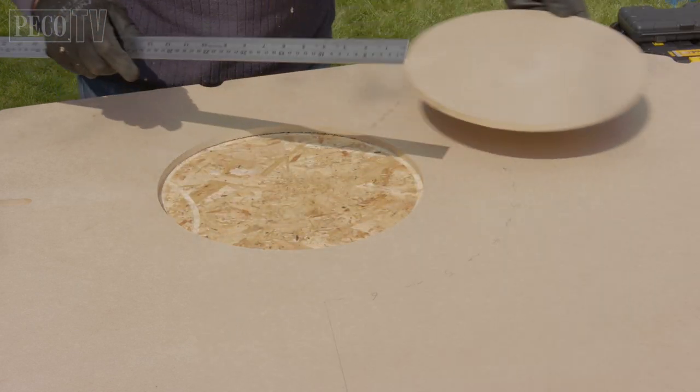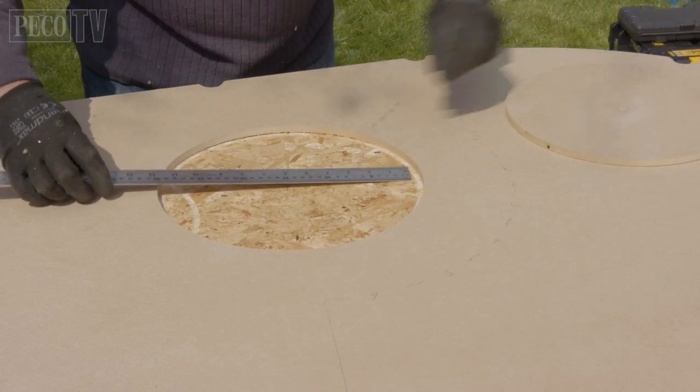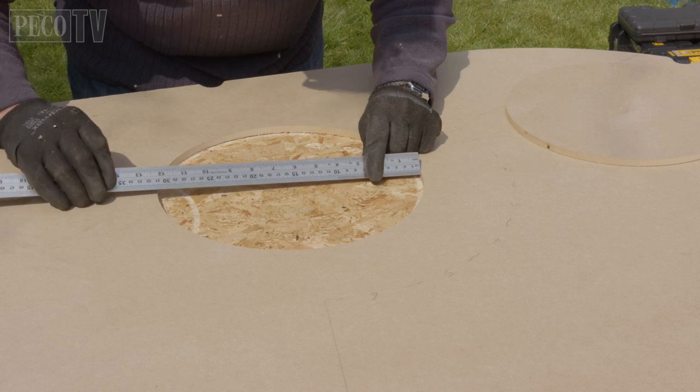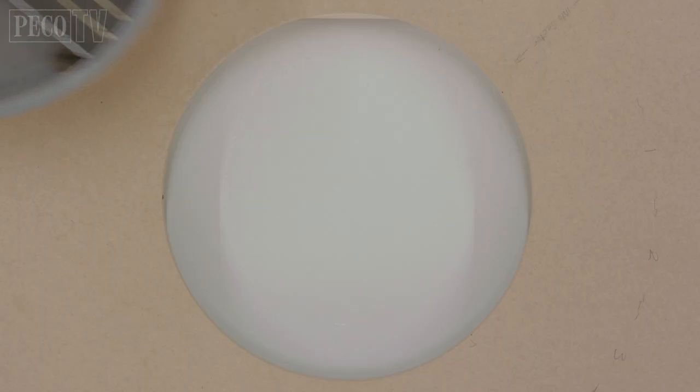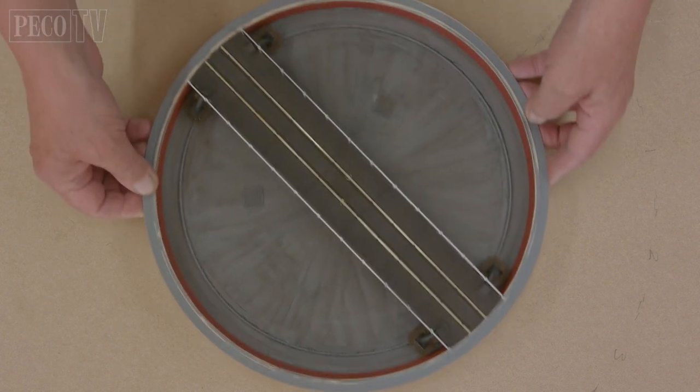Once you've removed the cut disc from your baseboard, again measure across the diameter to check your hole is big enough and the right size. Then, simply place the turntable in the hole and check it fits.